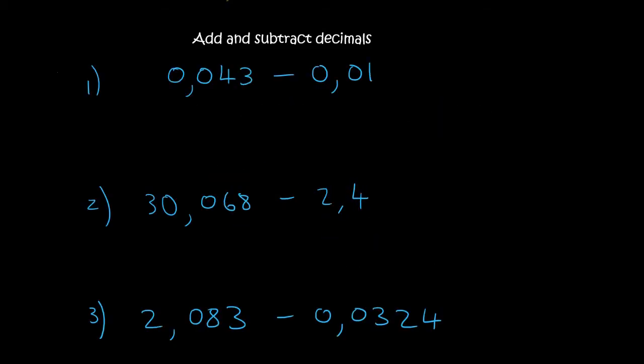So here's 3 more and then we're done. So 0.043 minus, now fill it up next to the comma. So 0.01. And then if there's any open spaces, add a 0. 3 minus 0 is 3. 4 minus 1 is 3. 0, and then 0. 0, 0, 3, 3.